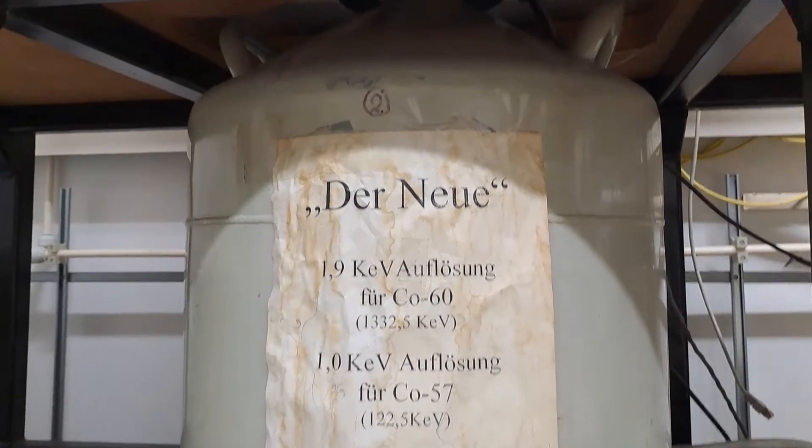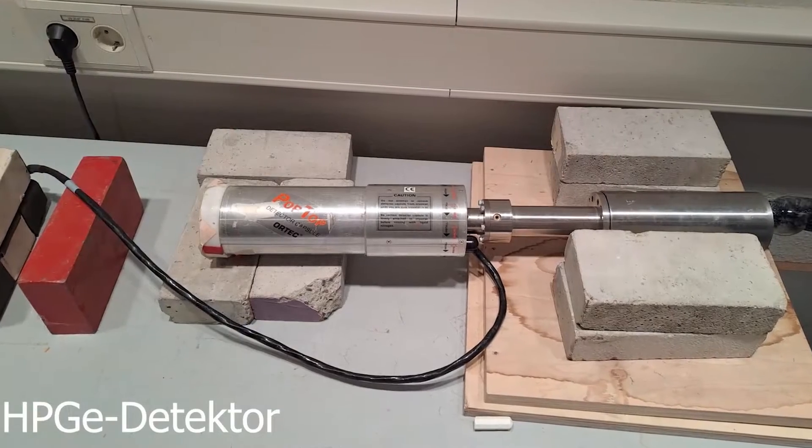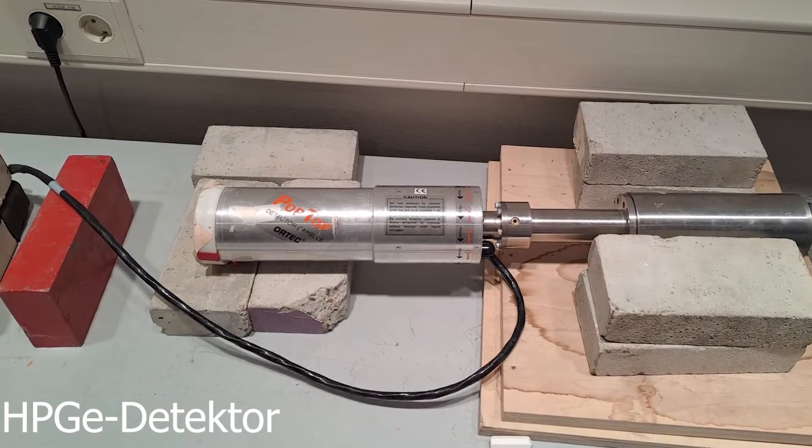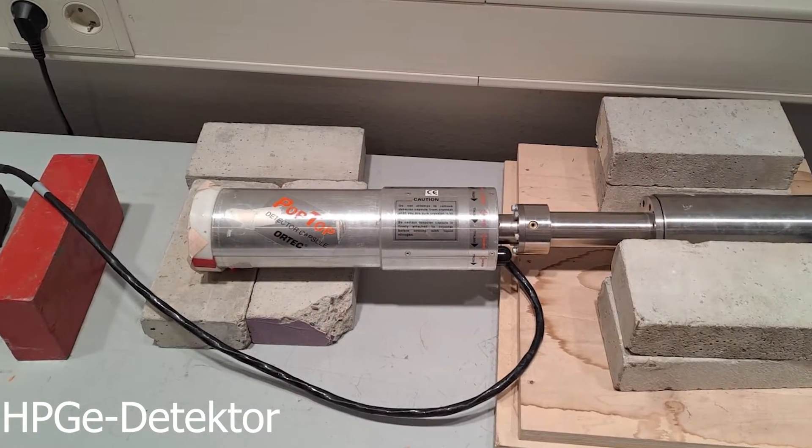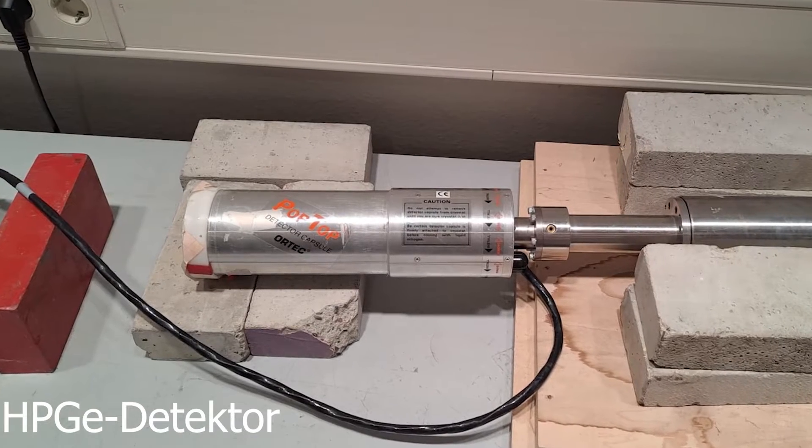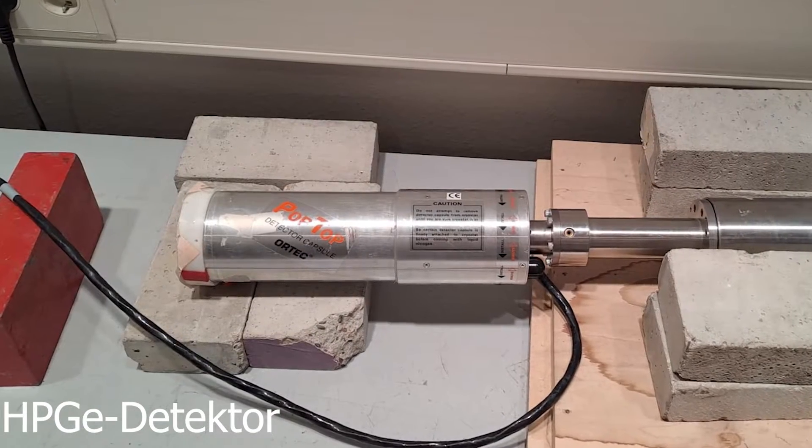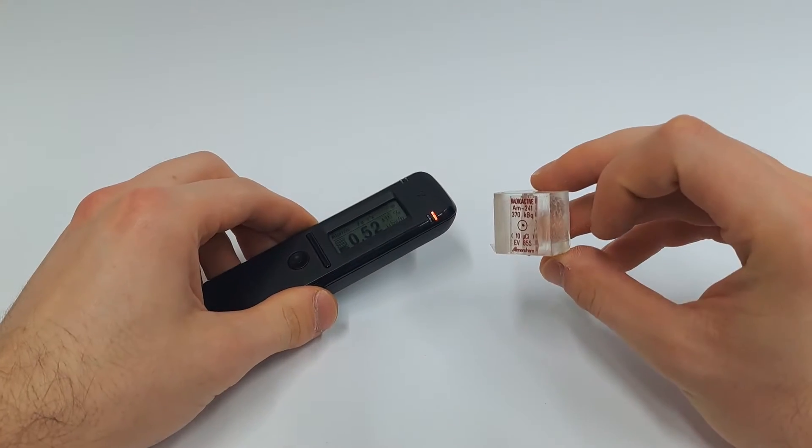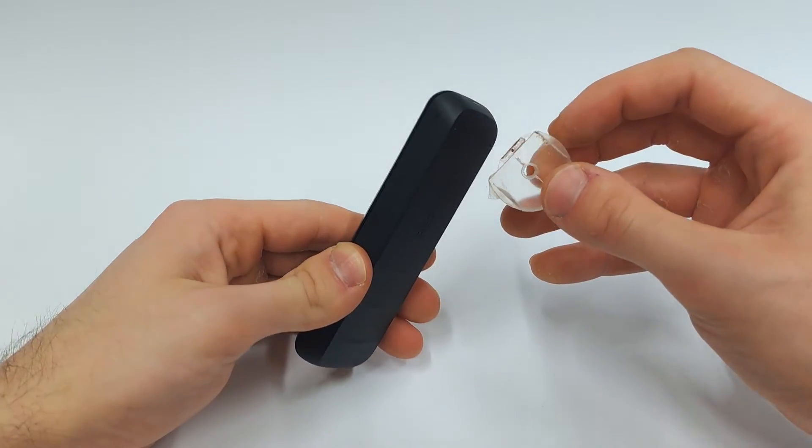This is a lithium-drifted germanium detector. These are quite unusual for nuclear laboratories, usually modern high purity germanium detectors are used. But just as a reminder, this video is about comparing the Radiacode to our laboratory equipment. This isn't representative for other laboratories.